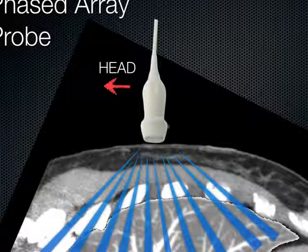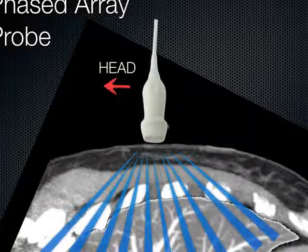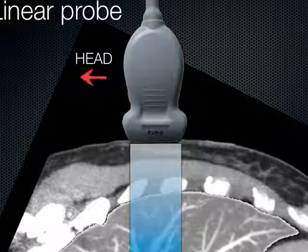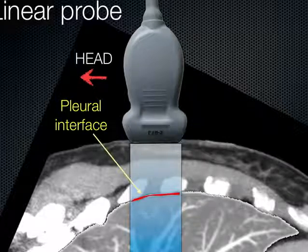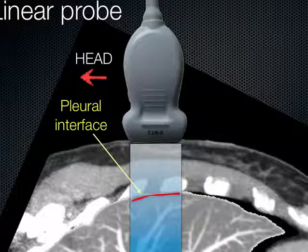The low-frequency phased array probe has a small footprint with a broad, deep field, but displaying the ultrasound beam results in loss of resolution in deeper structures. In contrast, the high-frequency linear probe has a larger footprint and provides great detail but at the expense of depth. Since the ultrasound beam does not expand laterally, the resolution at the surface is similar to that in deeper planes. When we use this high-frequency probe, it gives an excellent view of the pleural line and sliding.